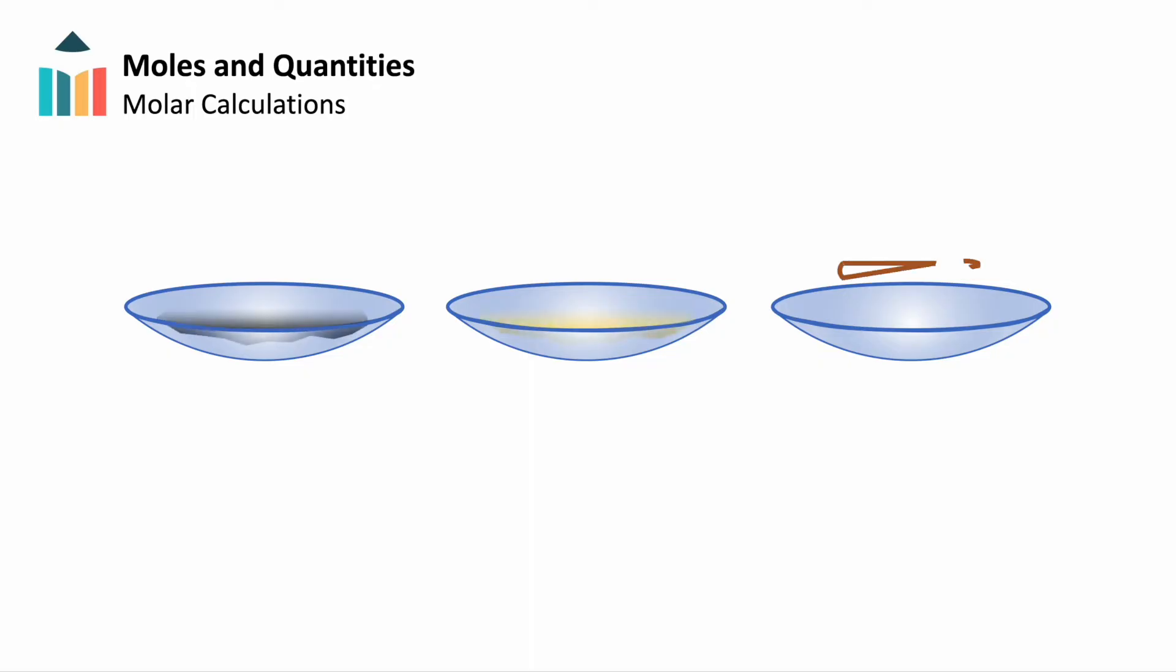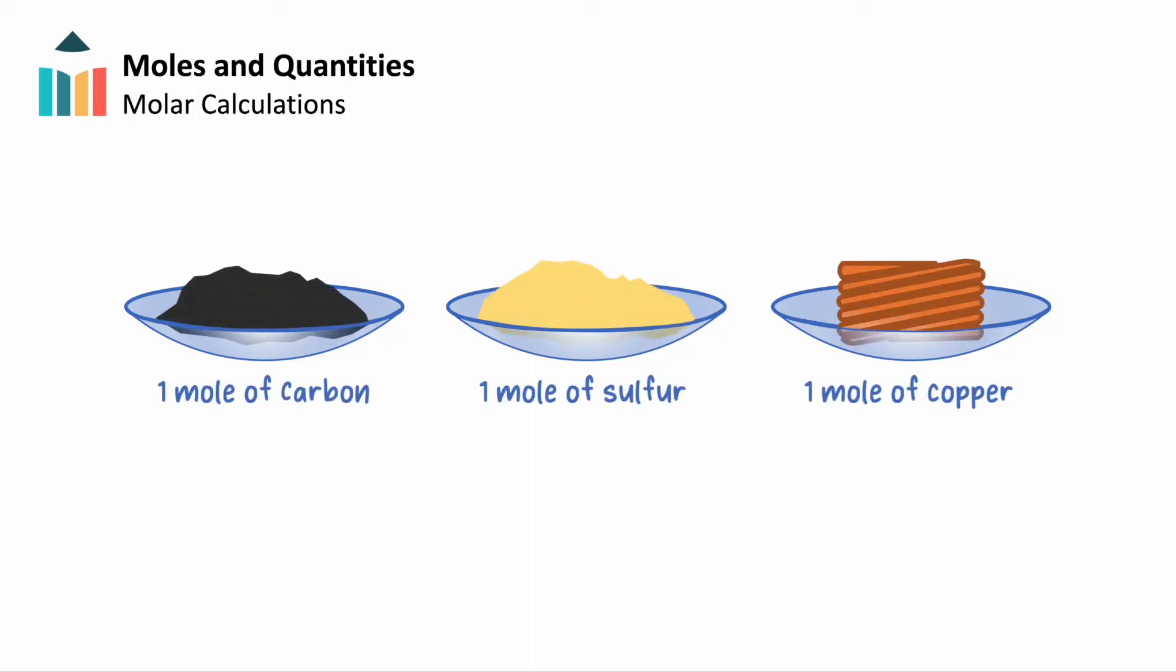A mole of carbon, sulfur, and copper will each contain 6.02 times 10 to the 23rd atoms. But they will not weigh equal amounts.